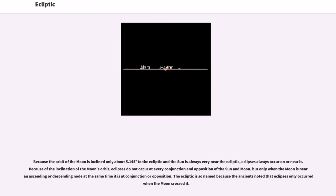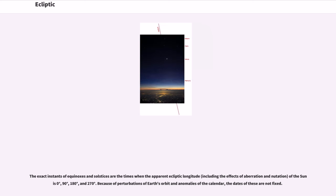Because the orbit of the Moon is inclined only about 5.145 degrees to the ecliptic and the Sun is always very near the ecliptic, eclipses always occur on or near it. Because of the inclination of the Moon's orbit, eclipses do not occur at every conjunction and opposition of the Sun and Moon, but only when the Moon is near an ascending or descending node at the same time it is at conjunction or opposition. The ecliptic is so named because the ancients noted that eclipses only occurred when the Moon crossed it.